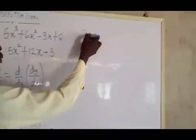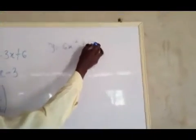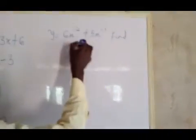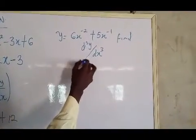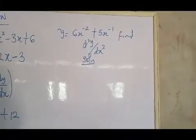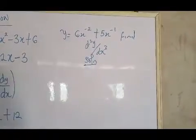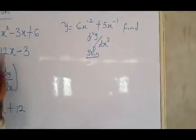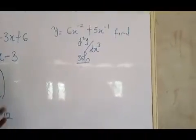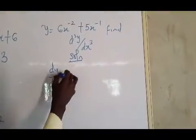Let's look at another question. Say we have y = 6x⁻² + 5x⁻¹, and they say find d³y/dx³. If you look at this question, you will see that to find d³y/dx³ you can't skip steps — you need your dy/dx and d²y/dx² first. So the first thing you need to do is find your dy/dx.